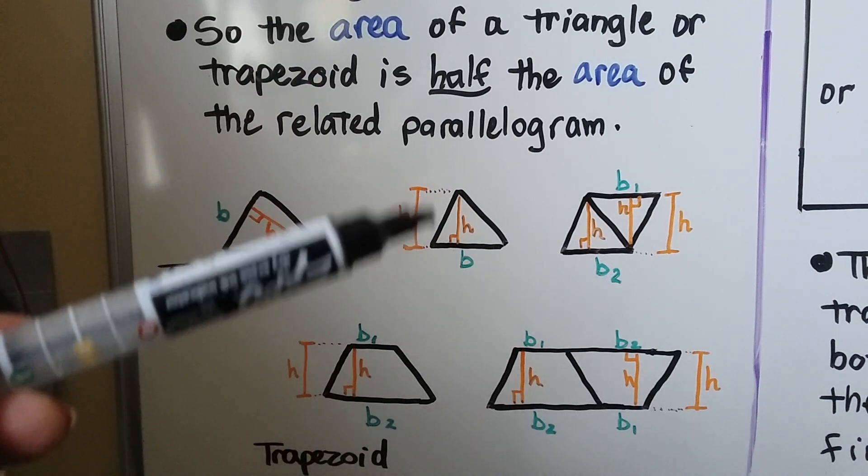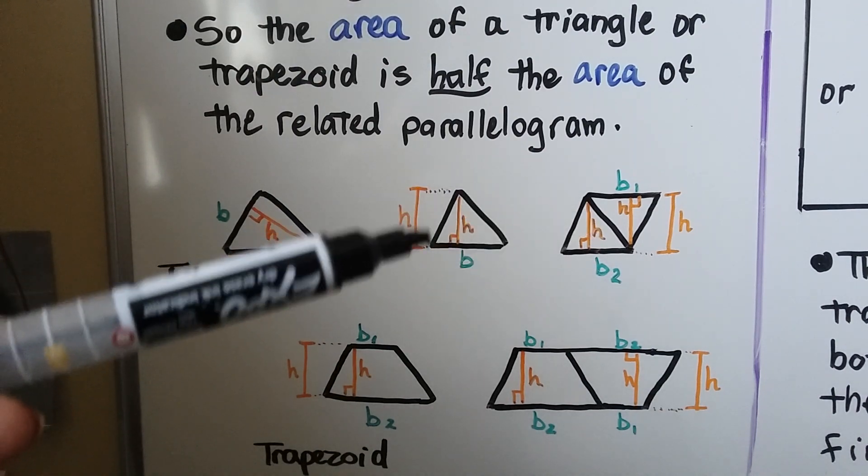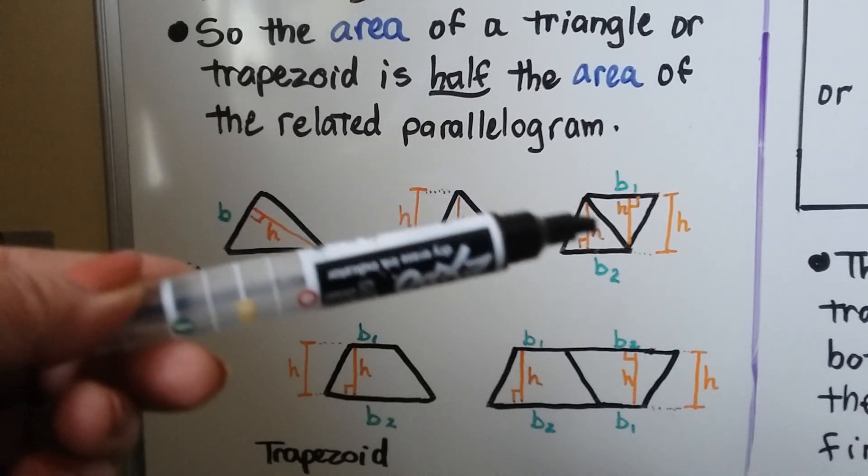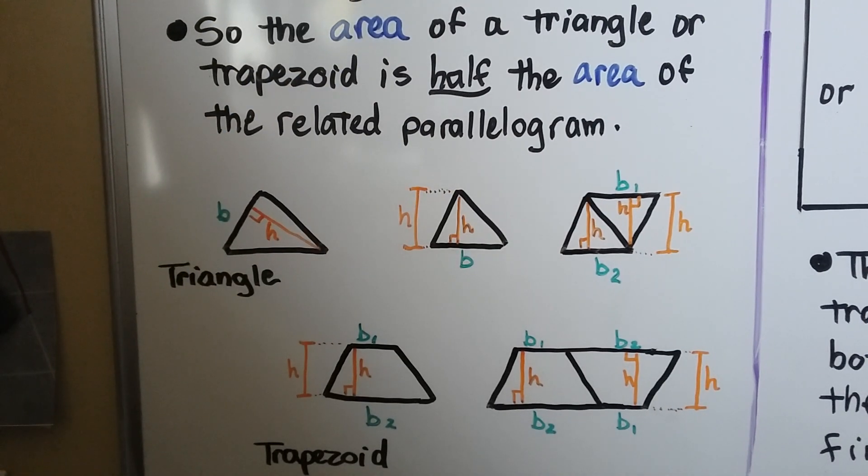So we can use half of this area to find this area, or we could find this area and multiply it by 2 to find that area. And same with the trapezoid. We could take the area of this trapezoid and multiply it by 2 to find the area of that parallelogram.